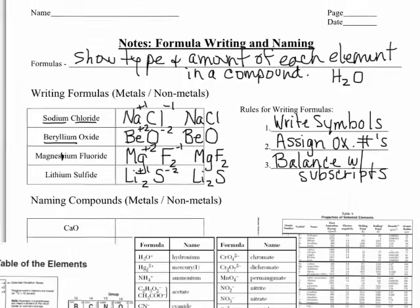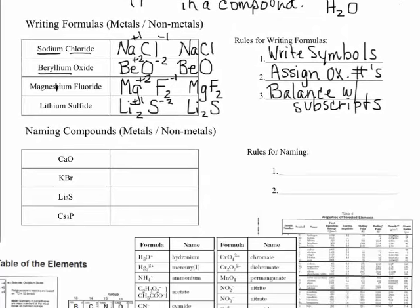Now we need to go in the other direction and take a formula and come up with a name. The first one here, we have calcium and then oxygen. You can always look the names up if you don't know them off the top of your head. We're going to name the first element, which is calcium, and then we name the second element. But because it is a binary compound, we're going to drop the ending on that second element and change it to IDE. With oxygen, it becomes oxide.